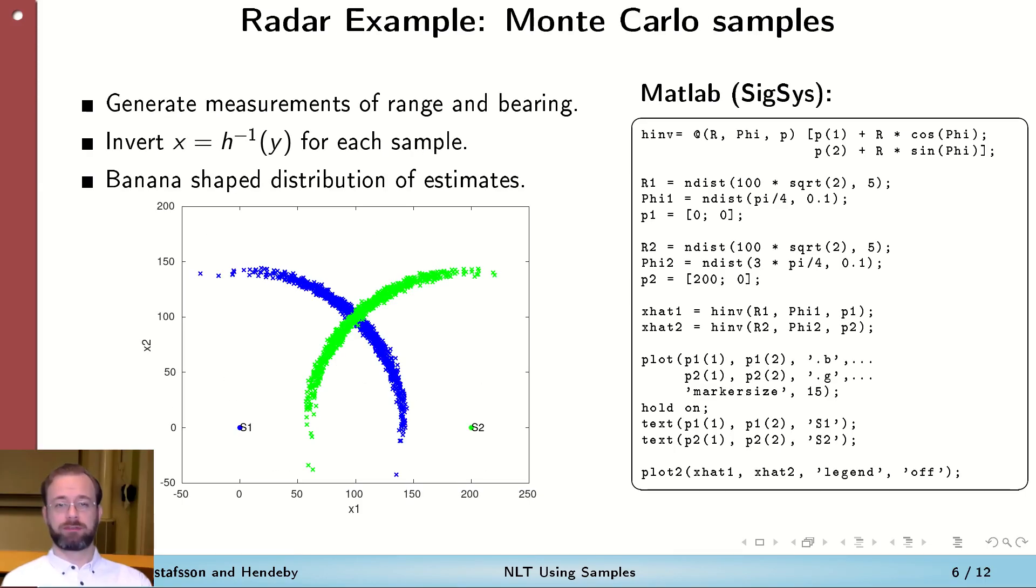To illustrate the Monte Carlo methods, we will take a number of measurements in the range bearing domain and transform them to the Cartesian domain. As visible here on the left, where the blue dots represent measurements from the left radar and the green dots measurements from the right radar. Notice the banana shape that comes from having rather good range measurements but poor bearing. The code used to generate this figure in Signal and Systems toolbox in MATLAB is given to the right.